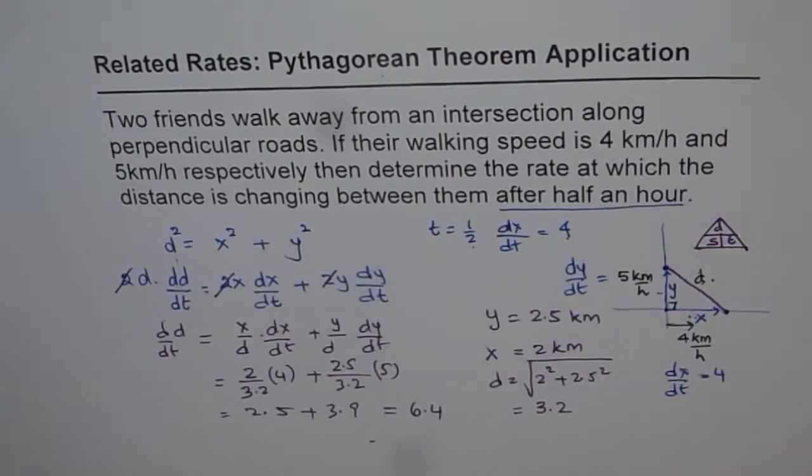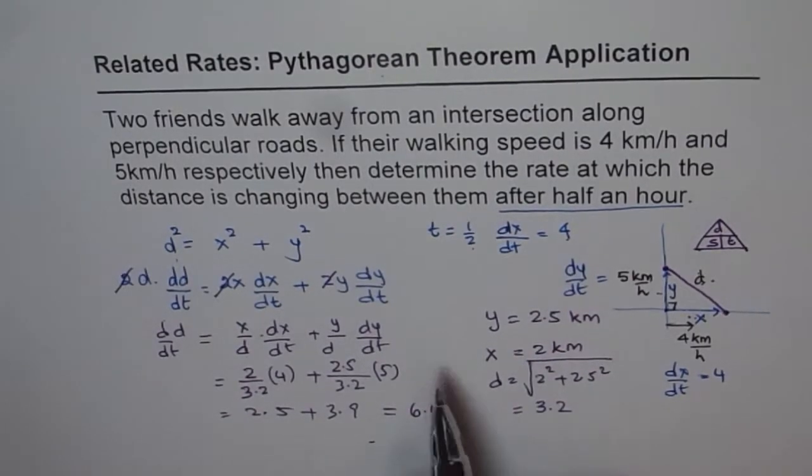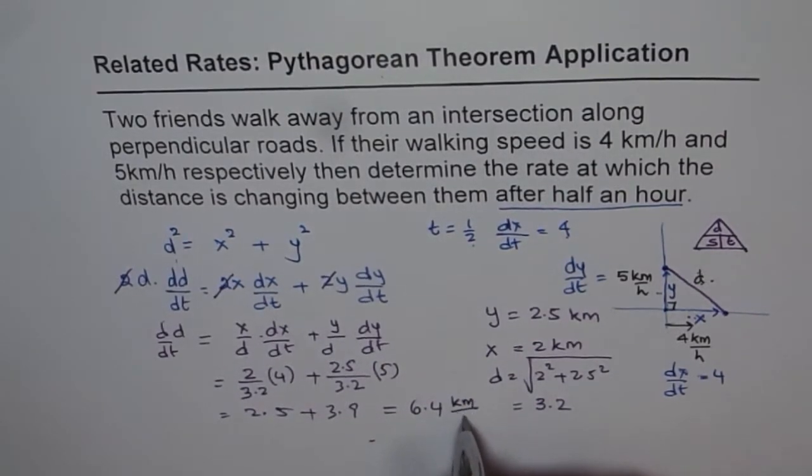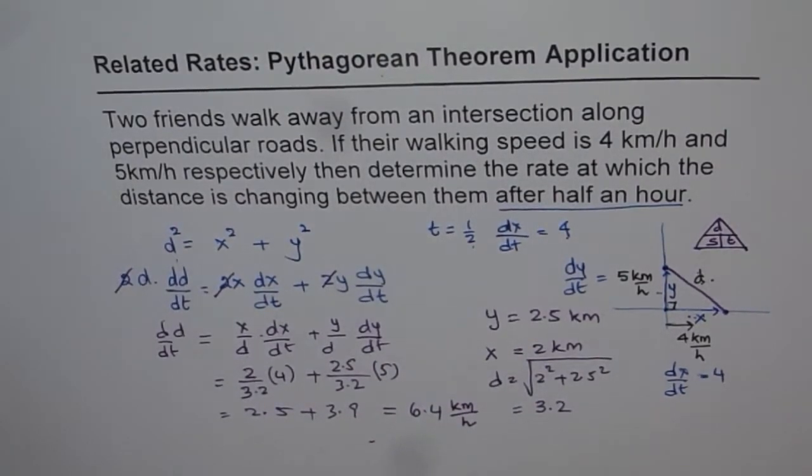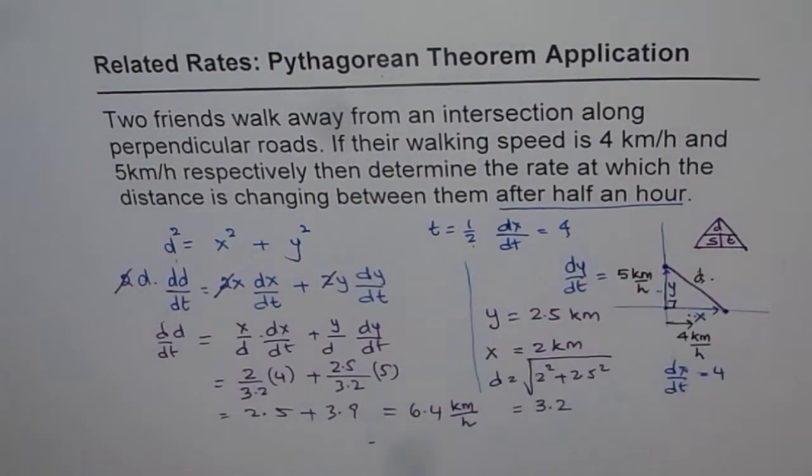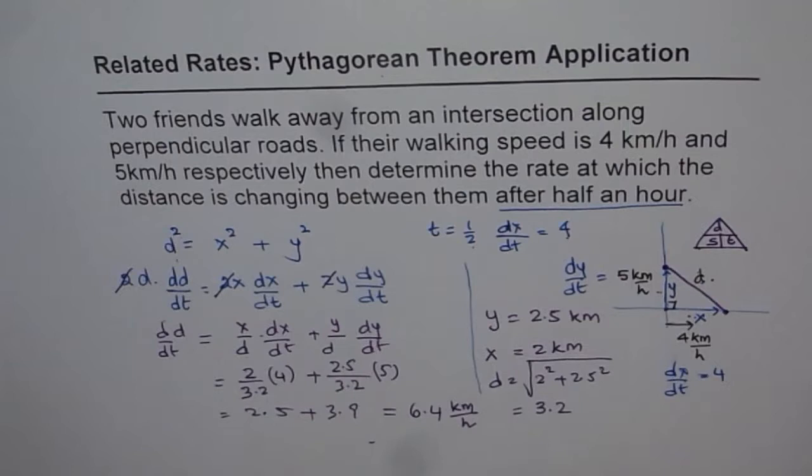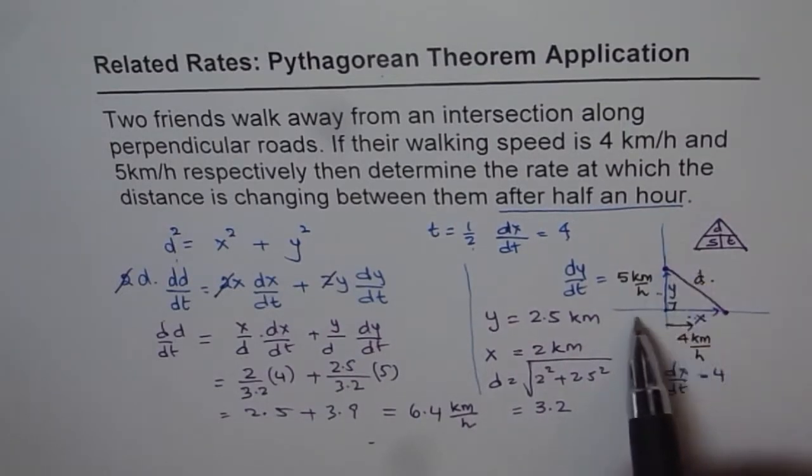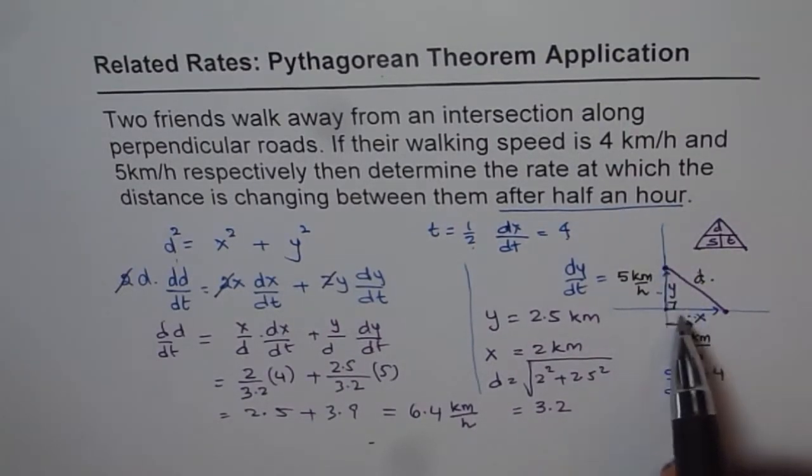So the rate is 6.4 and rate is always in the units of kilometers per hour in this case. So that is the answer. The rate at which the separation is increasing is 6.4 kilometers per hour. I hope you appreciate the method here.